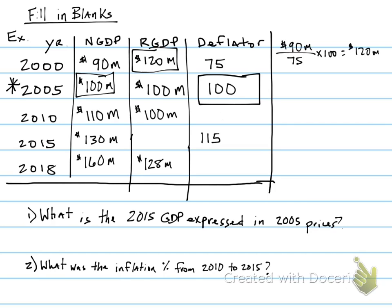Moving to 2010, we need to calculate the GDP deflator. We know our nominal GDP is $110 million, so I take $110 million divided by my real of $100 million, times 100, and that gives me an answer of 110. So my deflator for the year 2010 is 110.